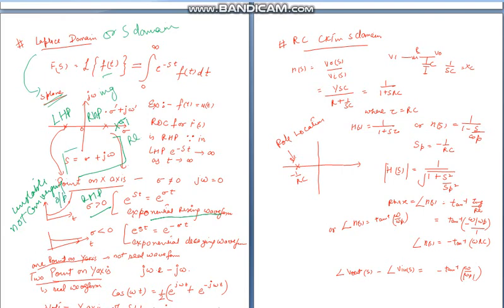If sigma is on left-hand plane, this will give e raised to power minus sigma T. This is exponentially decaying waveform. This makes system stable and this is converging output. That is the reason pole on left-hand plane makes system stable and pole on right-hand plane makes system unstable.